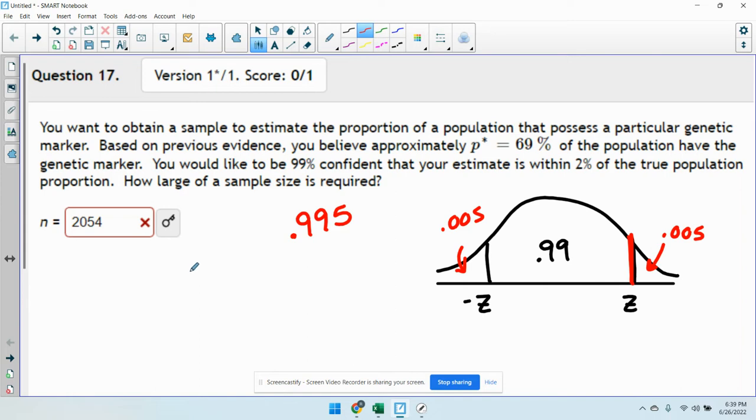From what you had in the calculator, you did 1 minus 0.05 divided by 2. But really what we're doing is we're doing 1 minus 0.01 divided by 2. That gives us the 1 minus 0.005, which gives us the 0.995.